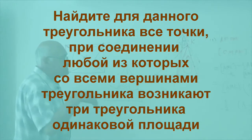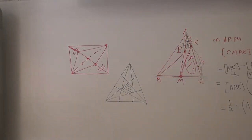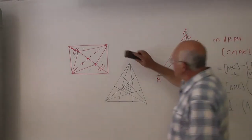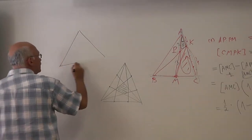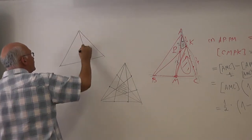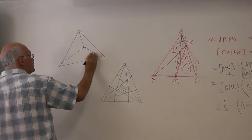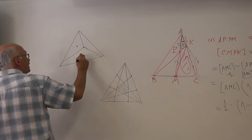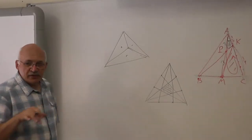Let's finish with our last problem of the test. We have a triangle and we want to find all the points in the plane such that the three areas are equal.